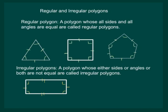Hence, it is an irregular polygon. Similarly, a right triangle is also an irregular polygon because neither its sides nor angles are equal.